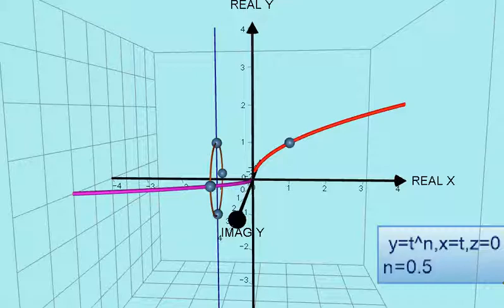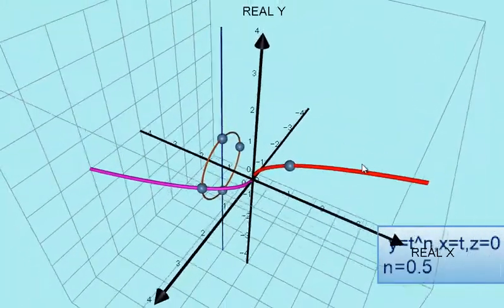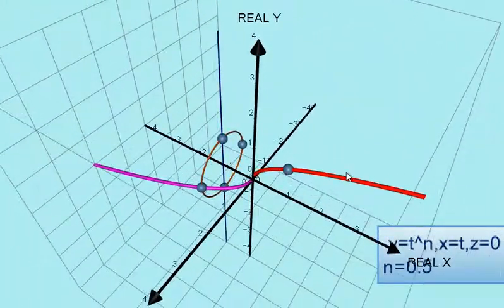Now this is the graph of y equals x to the power 0.5, and this is where the graph has a phantom, and that is also x to the 0.5.